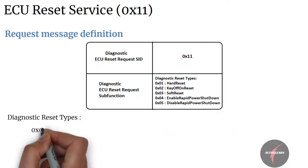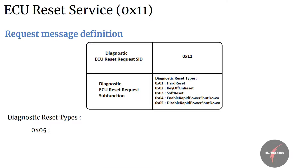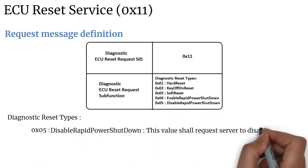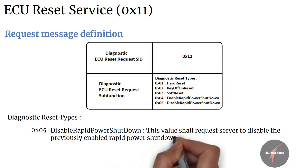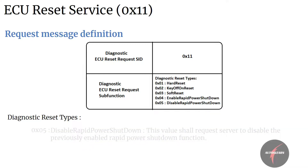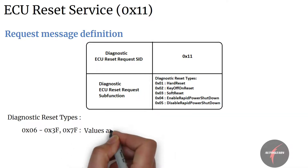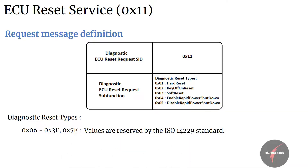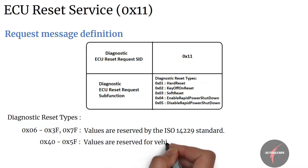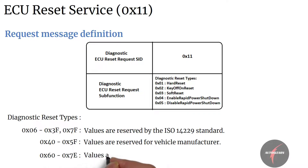Value five maps to disable rapid power shutdown; this value shall request the server to disable the previously enabled rapid power shutdown function. Then we have a range of values from 6 to 3F and also 7F, which are reserved by the ISO 14229 standard. The range 40 to 5F is reserved for vehicle manufacturers, and 60 to 7E is reserved for system suppliers.